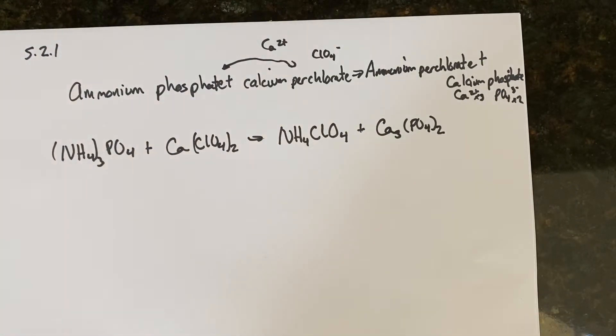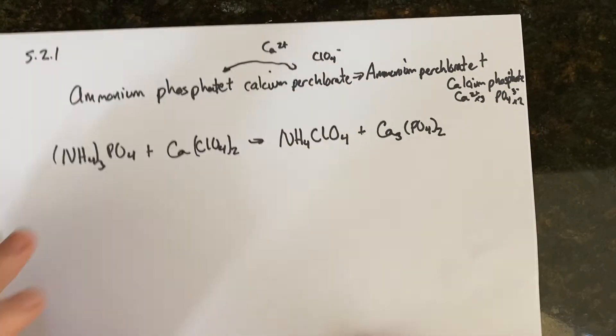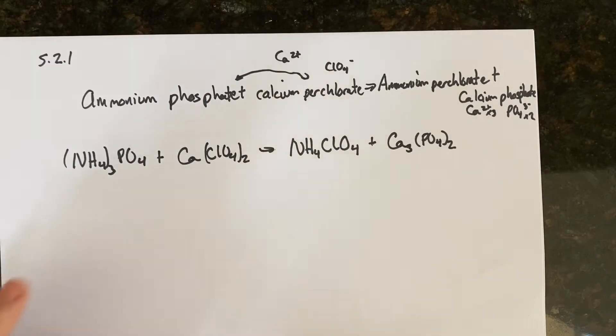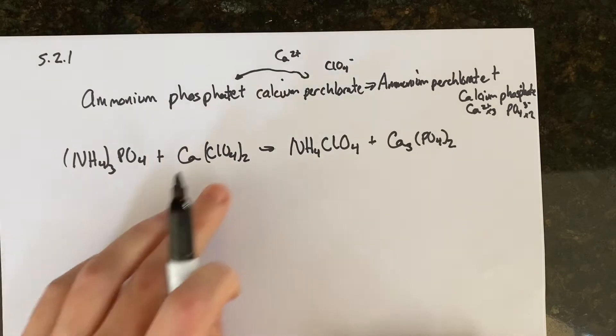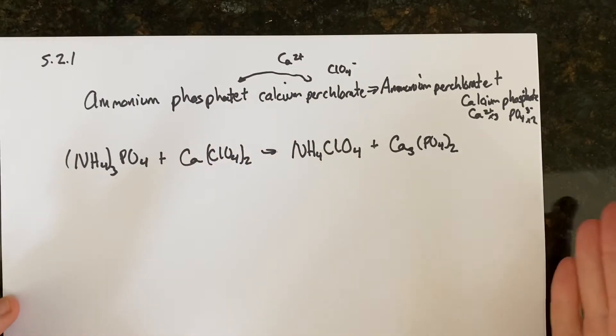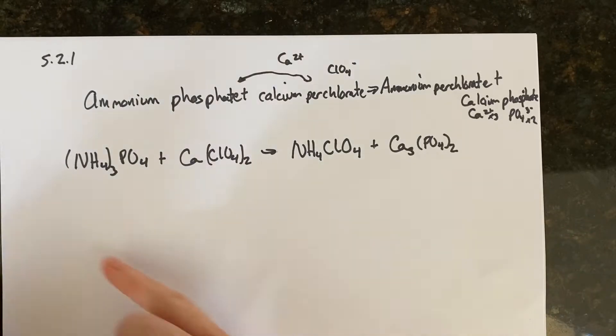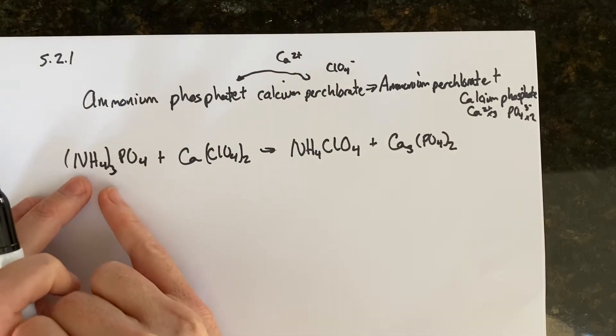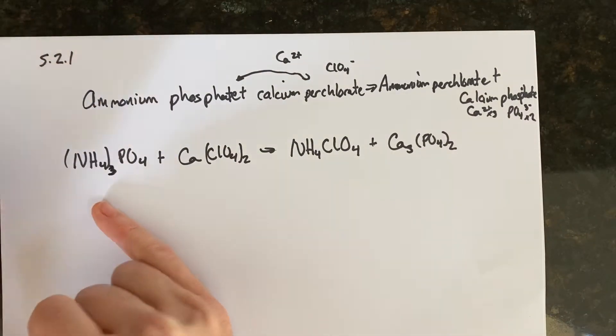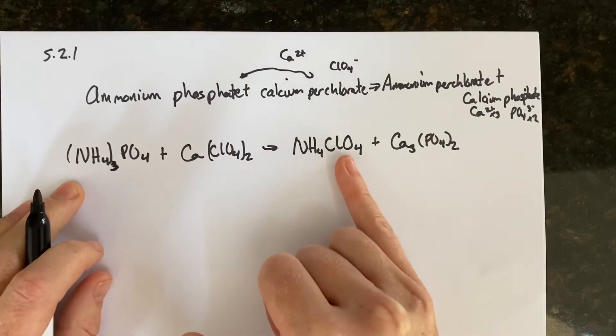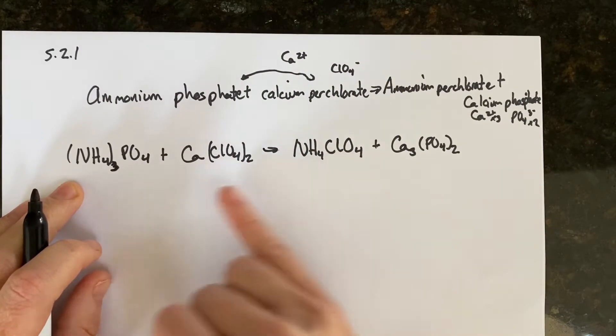All right. So now we've got to balance this thing. Kind of going from left to right here, I have ammonium, I've got three. Here I got one. Calcium, I got three. Here I got three. Perchlorate, I got two. Here I got one. So pretty much all of them have a point of difference, right? One thing I like to pay attention to, though, is I'm going from left to right. If I multiply, this is three. If I end up putting a three over here, I've changed that to three perchlorates, right? But let me keep going.